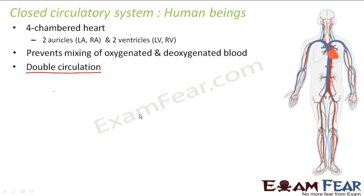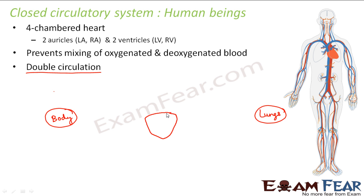Let us try to understand how we have double circulation here. Suppose this is the body and these are the lungs. Somewhere here we have the heart, which is divided into four chambers: the right auricle, the left auricle, the right ventricle, and the left ventricle.